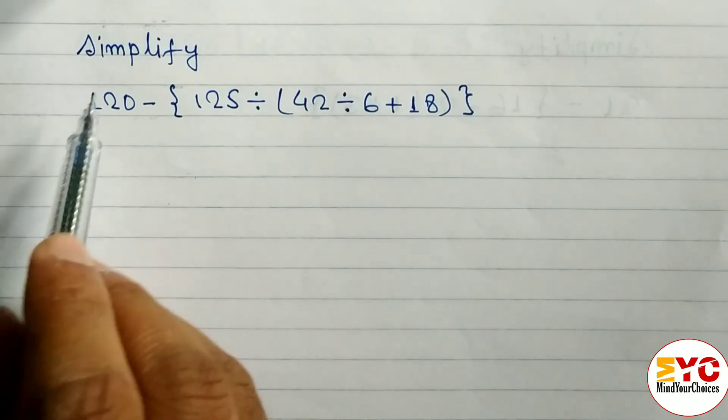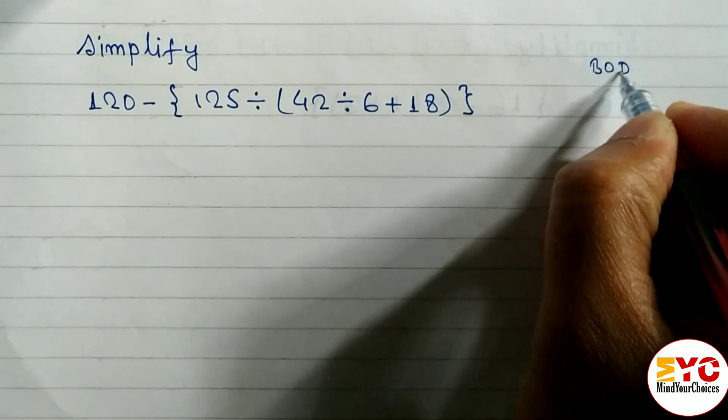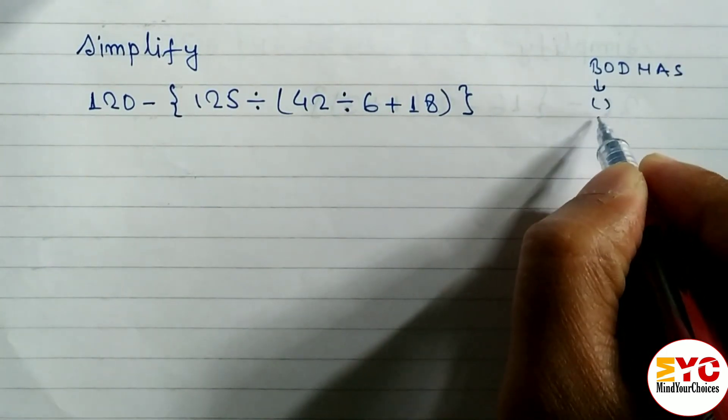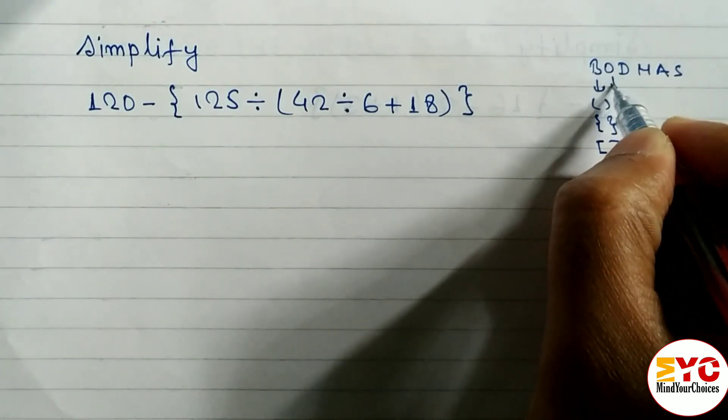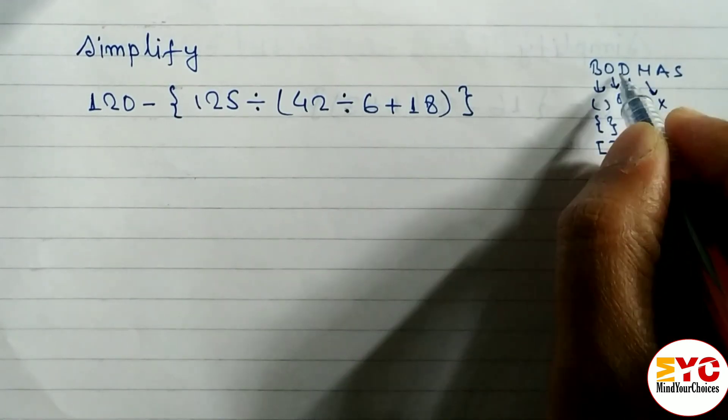In this video we will learn how to simplify using BODMAS. So what do you mean by BODMAS? You can see here, first of all B means bracket - we have to use a small bracket, then curly bracket, and finally big bracket. O means of, of means multiply. D means divide. M means multiply. A means addition and S means subtraction.